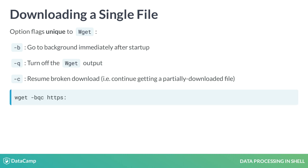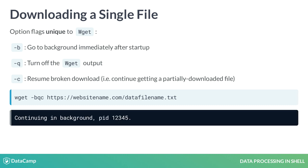Finally, you can link all the option flags together like this: wget -bqc, followed by the file location. Running this command on this hypothetical file location will generate the output: continuing in background, PID 12345. The PID is a unique process ID assigned to this particular data download job for your reference, in case you need to cancel the process.